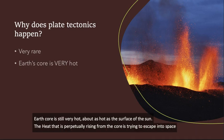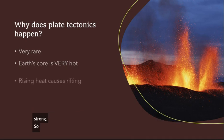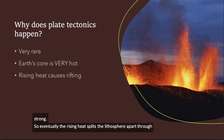The heat that is perpetually rising from the core is trying to escape into space, but Earth's rigid outer shell, the lithosphere, acts as a barrier. But this barrier is only so strong, so eventually the rising heat splits the lithosphere apart through a process called rifting, and the heat escapes.